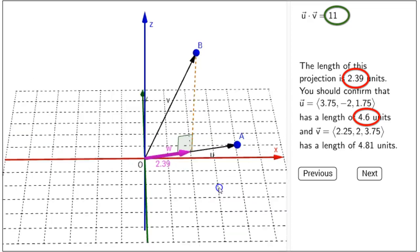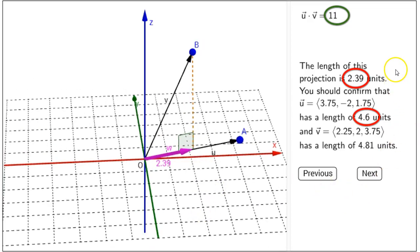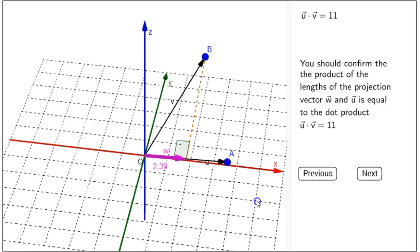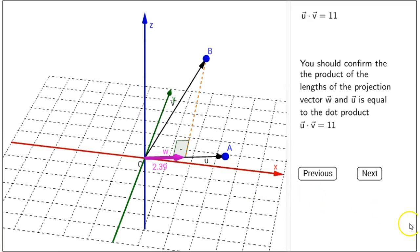So, why is that so? Why is it that the length of the projection times the length of U ends up being the dot product? The next panel says, you should confirm the product of the length of the projection vector W and U is equal to the dot product. U dot V equals 11. So, that's what we did. And why is that true?